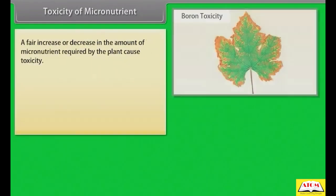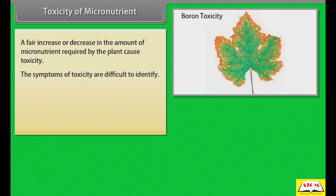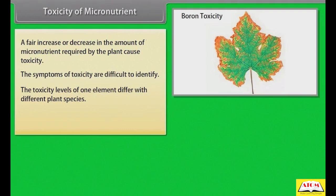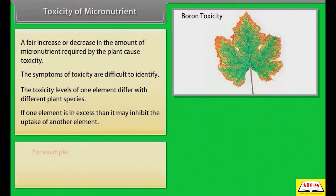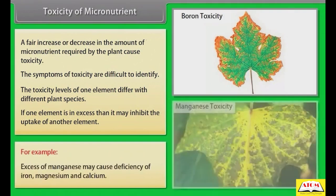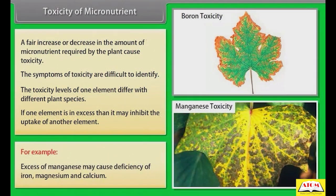Toxicity of micronutrients: a fair increase or decrease in the amount of micronutrient required by the plant causes toxicity. The symptoms of toxicity are difficult to identify. Toxicity levels of one element differ with different plant species. If one element is in excess, then it may inhibit the uptake of another element. For example, excess of manganese may cause deficiency of iron, magnesium and calcium.